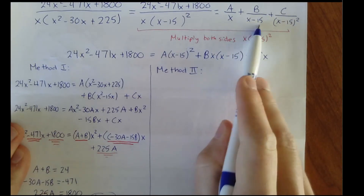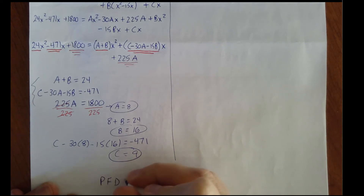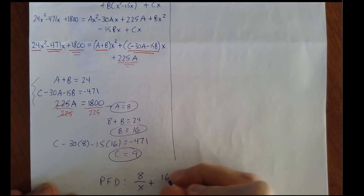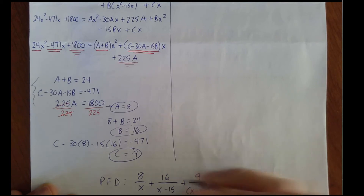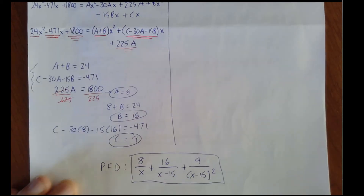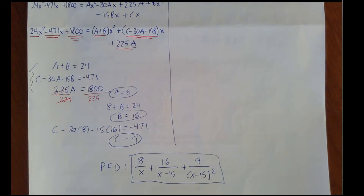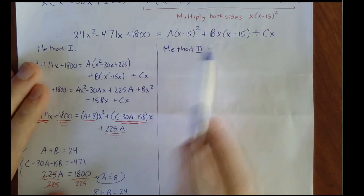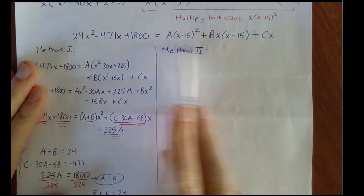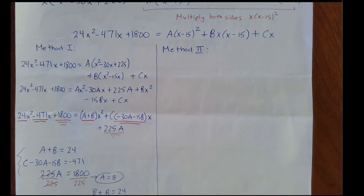Going back to the form we wrote down, our partial fraction decomposition is 8 over x, plus 16 over x minus 15, plus 9 over x minus 15 squared. Now I'm going to show you a much easier way to solve for A, B, and C. When we first cleared the fractions, another option is to plug in specific values of x that cancel some of these variables.